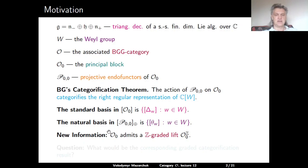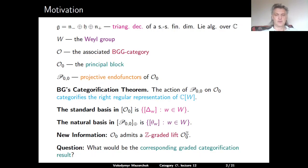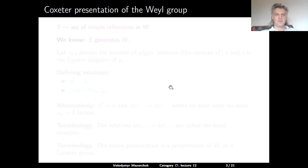We also have new information: category O₀ admits a Z-graded lift. This is due to the fact that, thanks to Soergel's combinatorial description, the associative algebra which describes category O₀ admits a natural grading by integers. A natural question is: what kind of combinatorics properly describes the graded Grothendieck group of category O and the corresponding graded action of the monoidal category of projective functors? In order to introduce the Hecke algebra, we need to start with the presentation of the Weyl group as a Coxeter group.